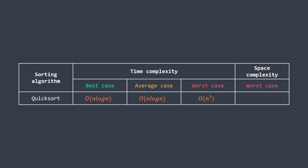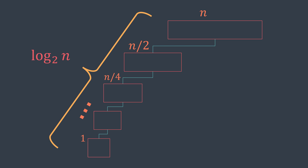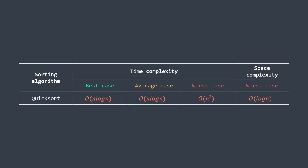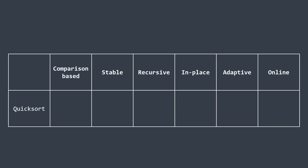For space complexity, even though quicksort doesn't use an auxiliary array, it is a recursive function so we must account for the call stack. In the best case, when the pivot is always the median, the input size is halved at each level — same as merge sort — so the call stack depth is O(log n). In the worst case, the array size decreases by only one per level, giving a call stack depth of O(n). However, with an optimization using tail recursion, we can limit space usage to O(log n) even in the worst case. So the space complexity of quicksort is O(log n).